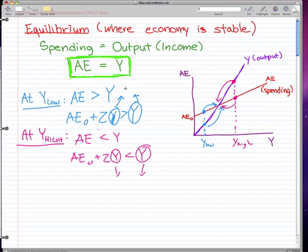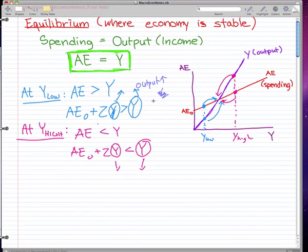This is, for example, when output is rising—when output goes up, that implies your spending goes up. That implies AE goes up, or your spending goes up.